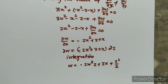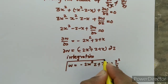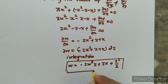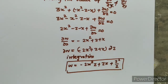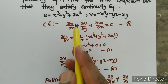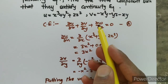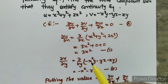So what is our third component? w equals minus 2x squared z plus zx plus z squared over 2. Our question is satisfied — this satisfies the continuity equation: del u upon del x plus del v upon del y plus del w upon del z equal to 0. Thank you for watching this video. Like and subscribe.